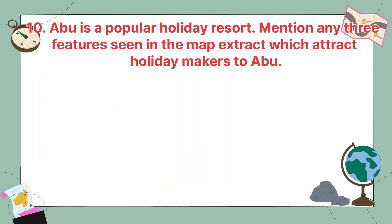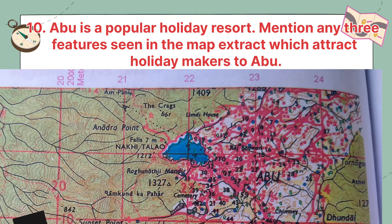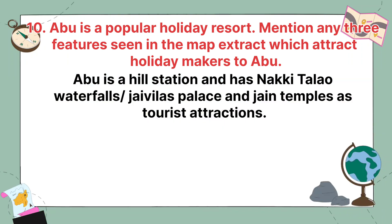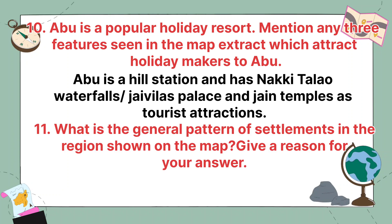Abu is a popular holiday resort. Mention any three features seen in the map extract which attract holiday makers to Abu. Abu is a hill station and has Nakki Lake, waterfalls or Jai Vilas Palace, and Jain temples as tourist attractions — that is why it is a popular holiday resort.